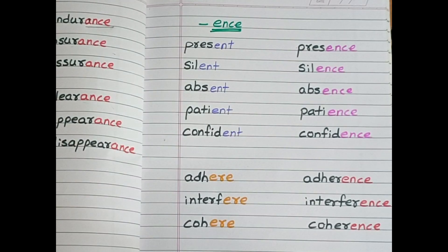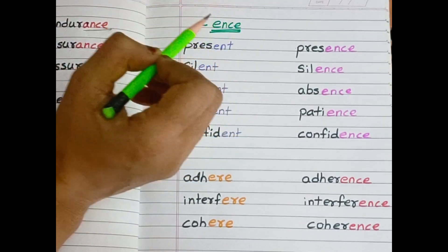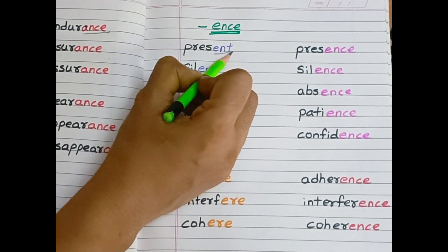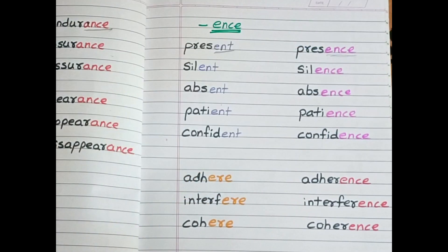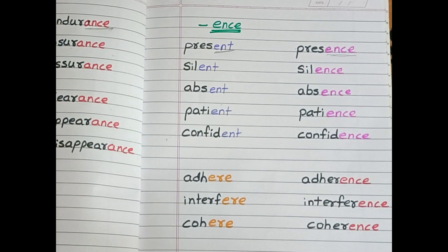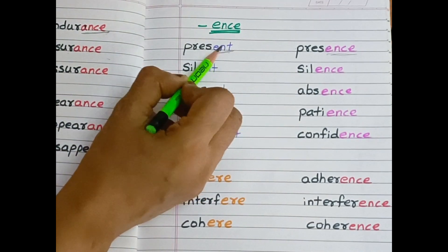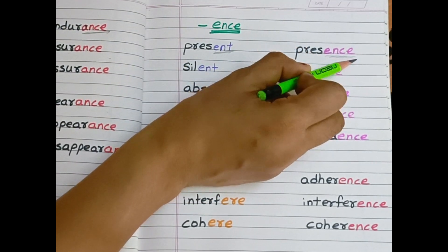Now, let us see where to add e-n-c-e. If the word ends with e-n-t, then e-n-c-e is added in the end of the word. Present—e-n-t—becomes presence, e-n-c-e.